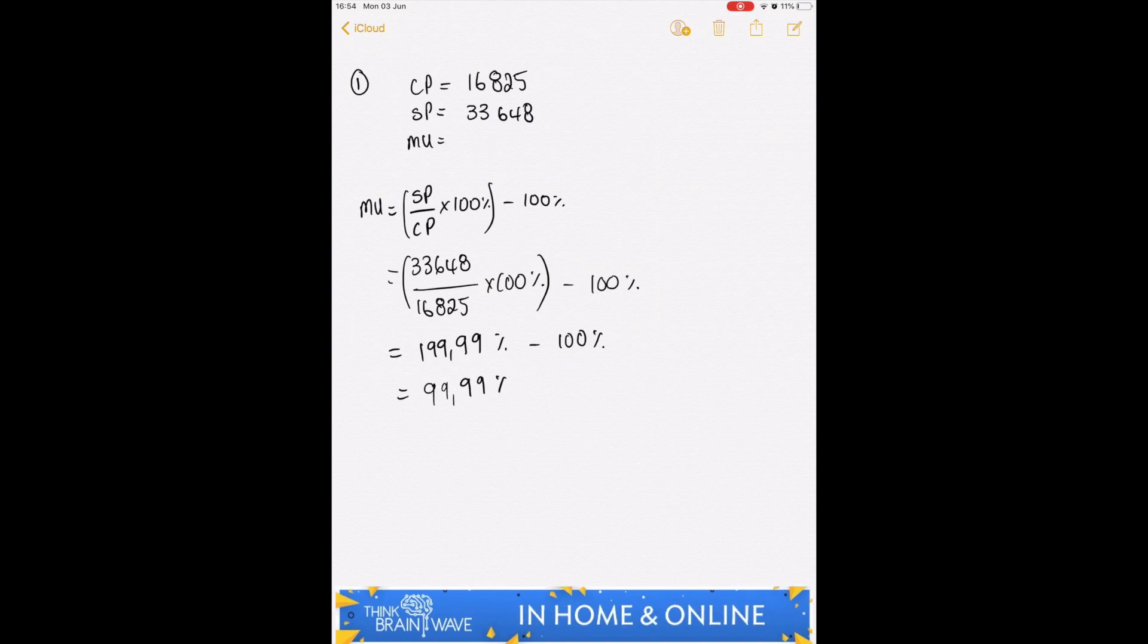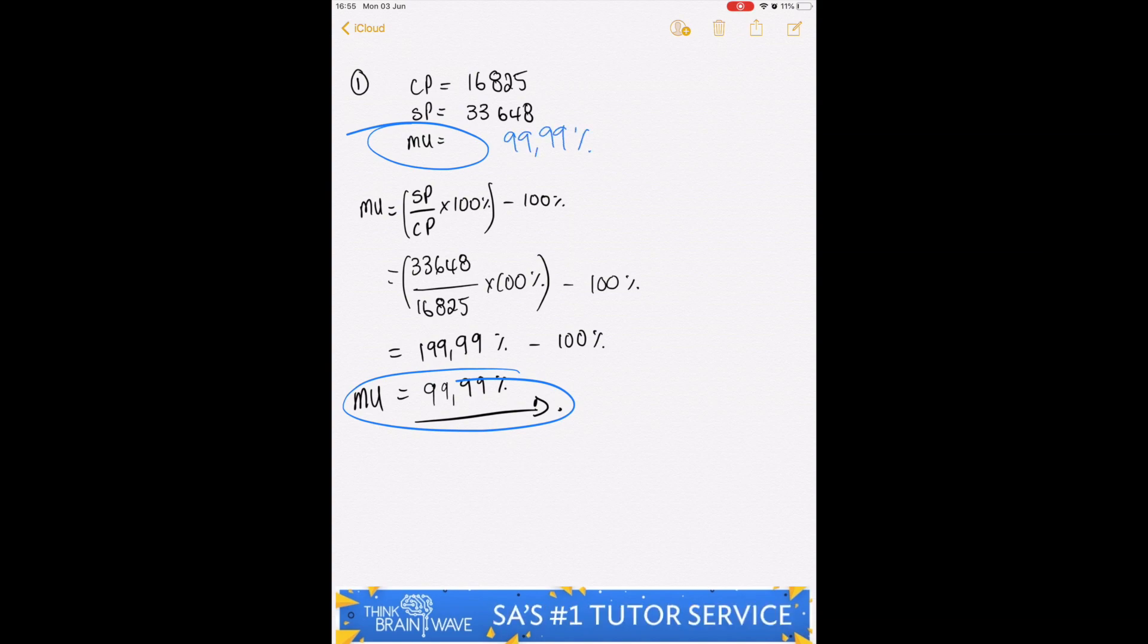99.99 percent is effectively 100 percent, so that is your markup. You've essentially doubled 16,825 to get to 33,648.